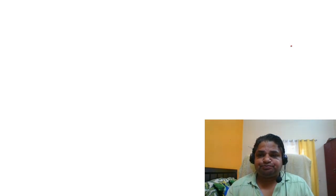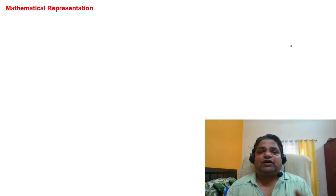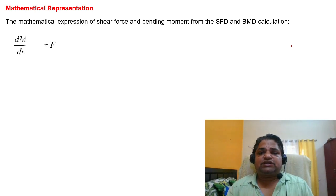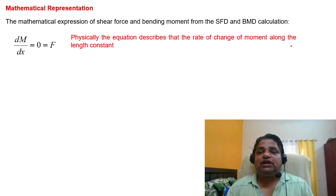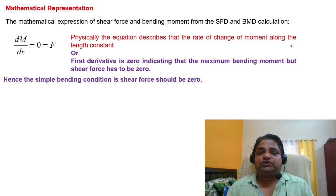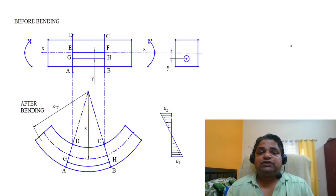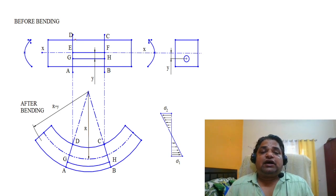To summarize what we know so far: we defined what a beam is, classified beams, reviewed shear force and bending moment, and now we know what simple bending is and how uniform bending is created, along with the assumptions. The mathematical condition for simple bending is dM/dx = 0, meaning the first derivative of moment along the length is zero, which physically describes a constant bending moment and zero shear force.